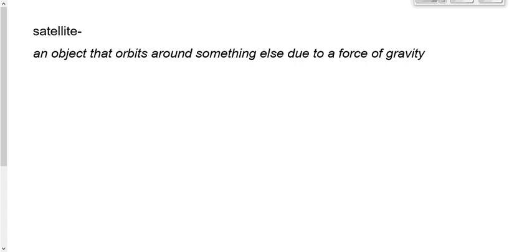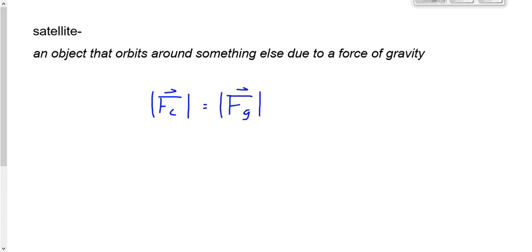In both cases — natural or artificial — we analyze them the same way. Because there's a centripetal force as the satellite orbits in more or less a circle around the Earth, Sun, or whatever it's orbiting around, and that centripetal force is caused by gravity, we set FC equal to FG.